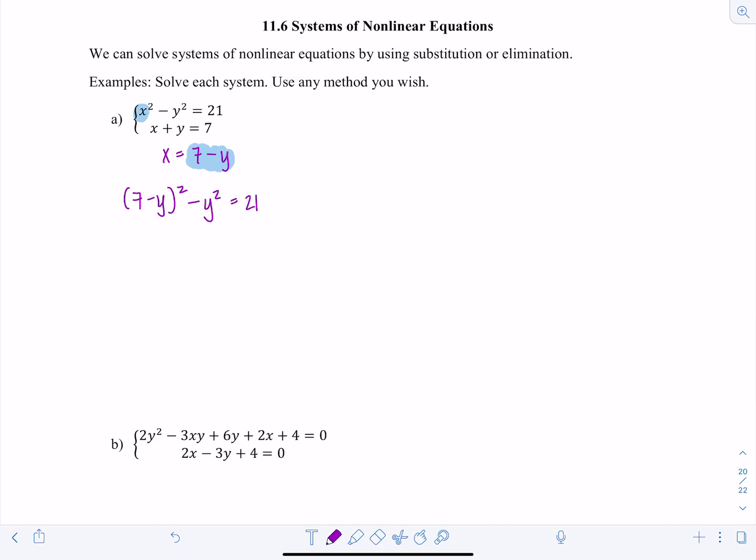Then I'm going to multiply that expression out, so I'll have 49 minus 14y plus y squared minus y squared equals 21. And then notice y squared cancels out here.